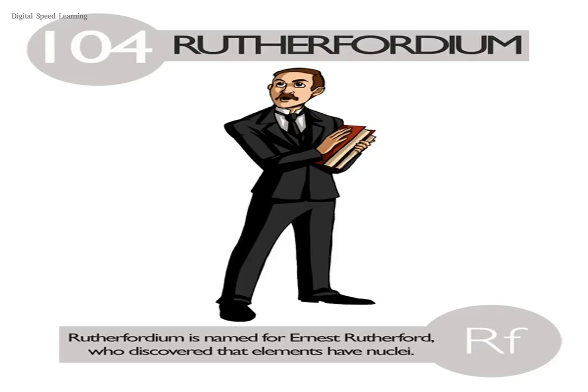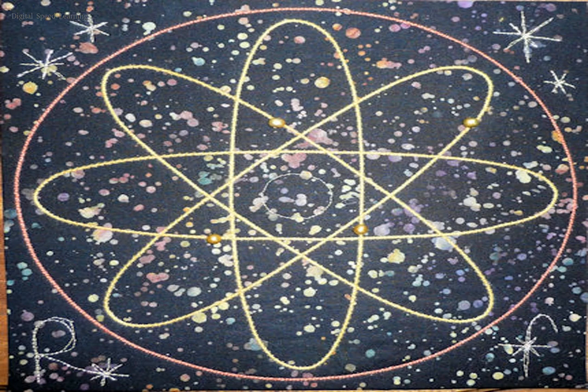In the periodic table of the elements, it is a D-block element and the second of the fourth-row transition elements. It is a member of the seventh period and belongs to the group 4 elements.